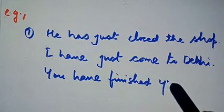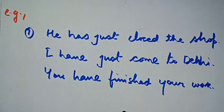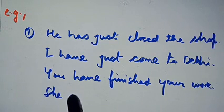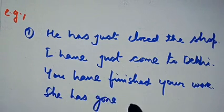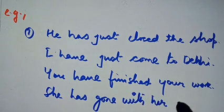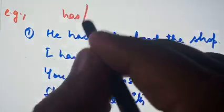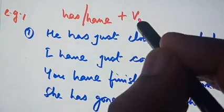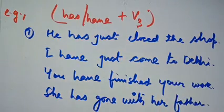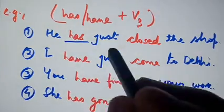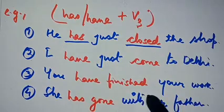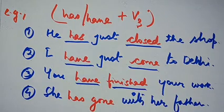And she has gone with her father. In these sentences, has/have plus third form of the verb shows present perfect tense. So the rule becomes has/have plus third form of the verb. We see he has plus third form, have plus third form, and has plus third form.